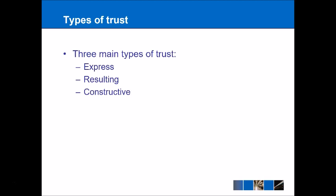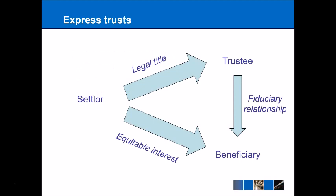So there are three main types of trust — though there are actually more than three. The three main ones we're going to look at in this lecture are: express trust, resulting trust, and constructive trust. Let's start with express trusts because this is probably the most common.